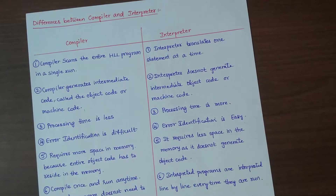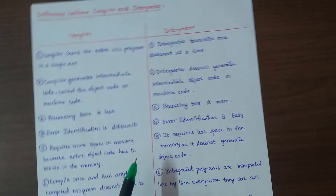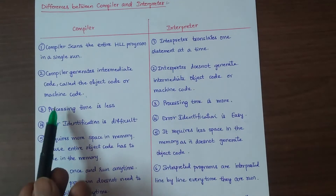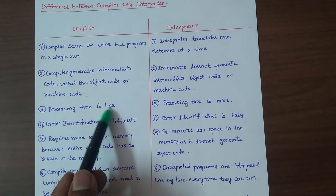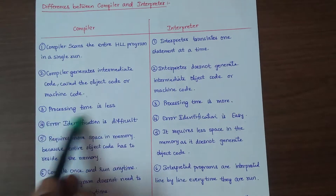Point 3: The compiler requires less processing time. The interpreter requires more processing time.